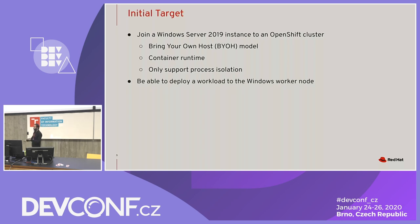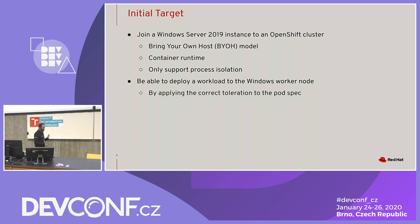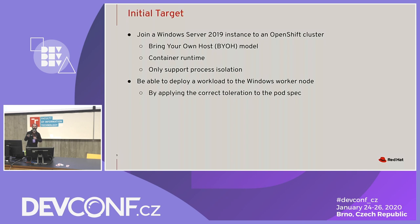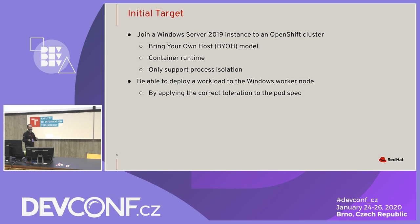Once the node is attached to an OpenShift cluster, we want to deploy workloads to the Windows worker node. To differentiate between Linux and Windows nodes, we apply a taint to the node. Pods that want to run on that node must specify a toleration in their pod spec, ensuring targeted scheduling on Windows nodes only — preventing Linux workloads from accidentally landing on the Windows node.